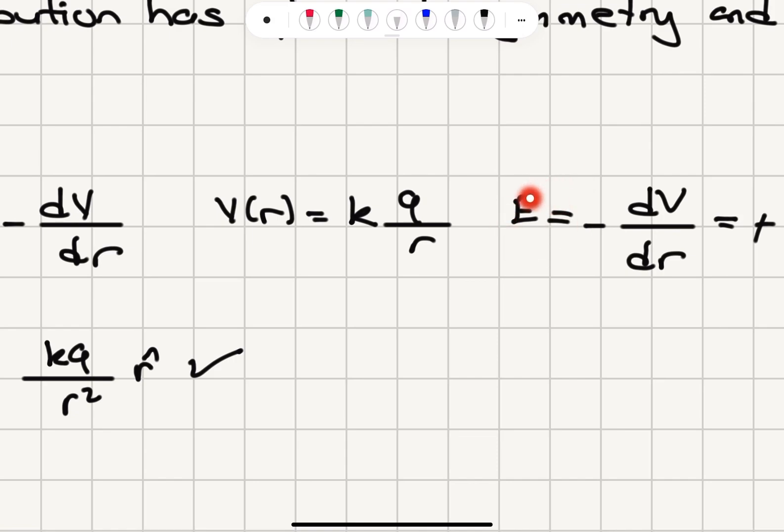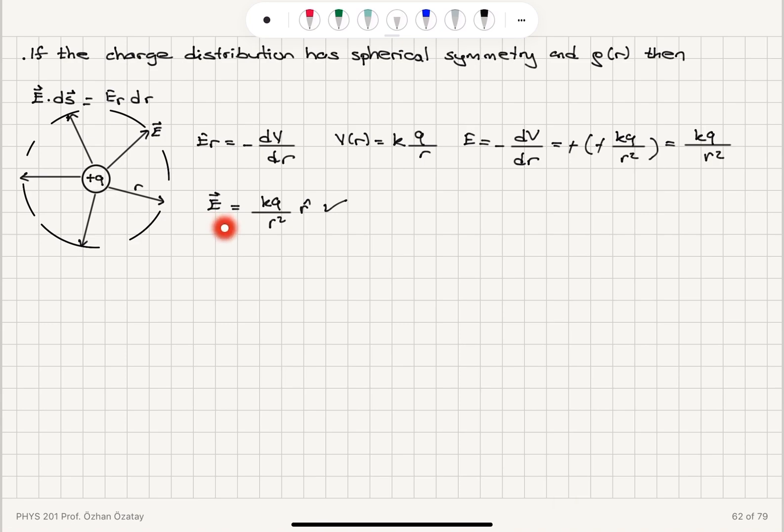This is the radial component of the electric field, Er. Therefore, the electric field itself is kq over r square in r-hat direction.